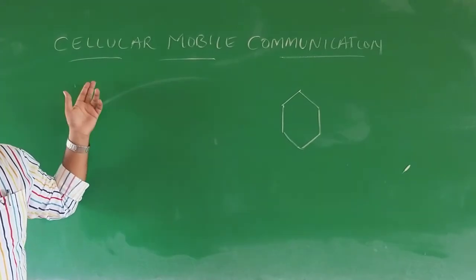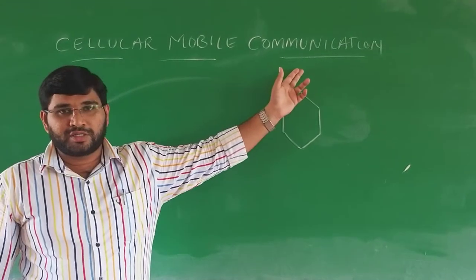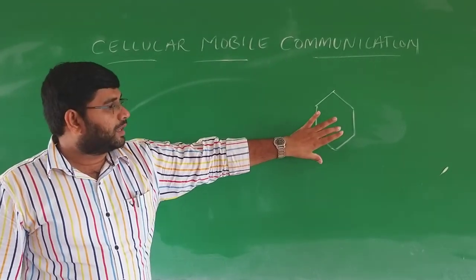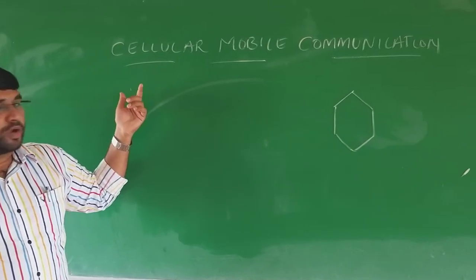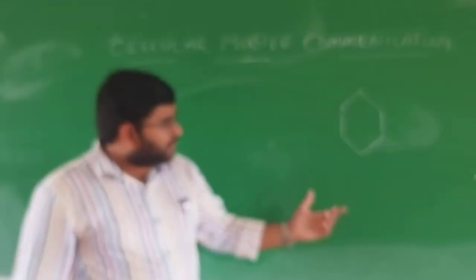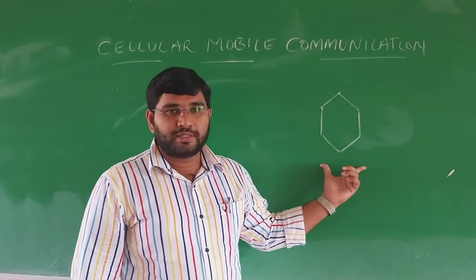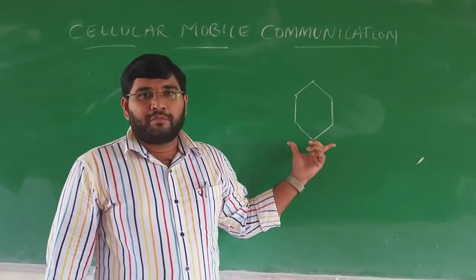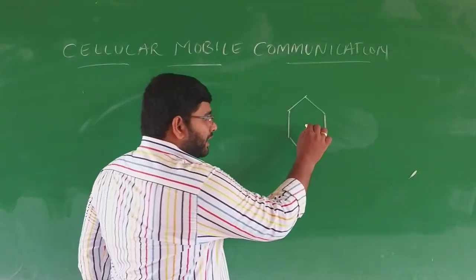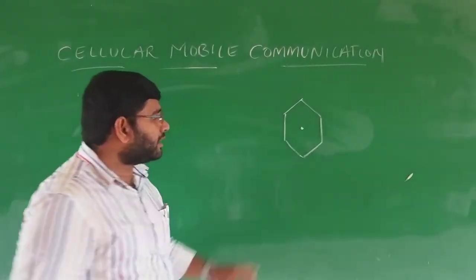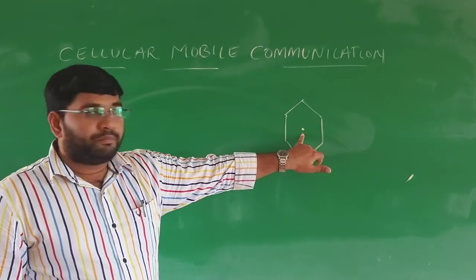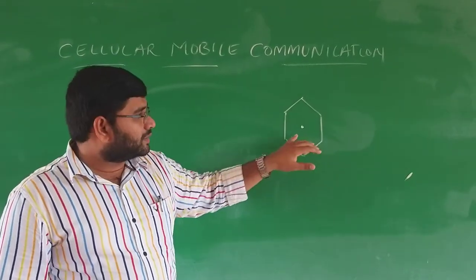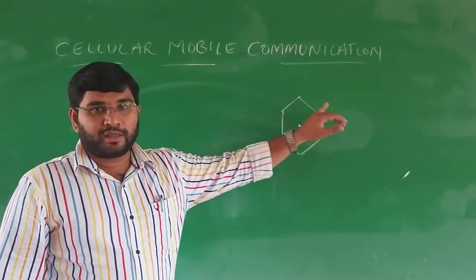Then what about cellular? Cellular is nothing but mobile communication based upon the cellular process. Here we use a word called cell. A cell is nothing but the coverage area of a base transceiver station — in local language we can call it a cell tower. So the coverage area of a cell tower is known as a cell.